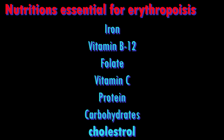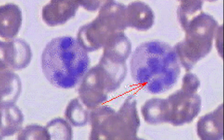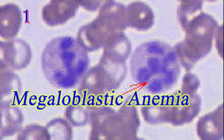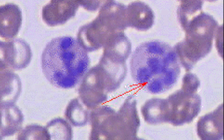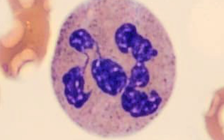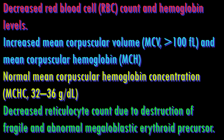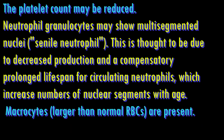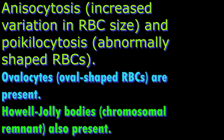Megaloblastic anemia results from inhibition of DNA synthesis during RBC production. When DNA synthesis is impaired, the cell cycle cannot progress from the G2 growth stage to the mitosis stage. This leads to cell growth without cell division, presenting as macrocytes. Megaloblastic anemia is caused most often by vitamin B12 deficiency, folate deficiency, or certain chemotherapeutic or antimicrobial agents.